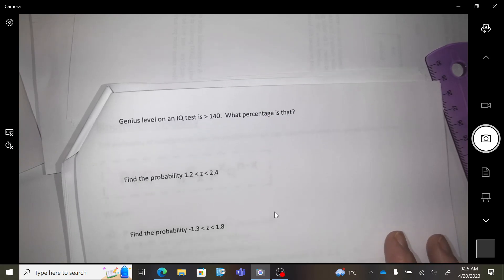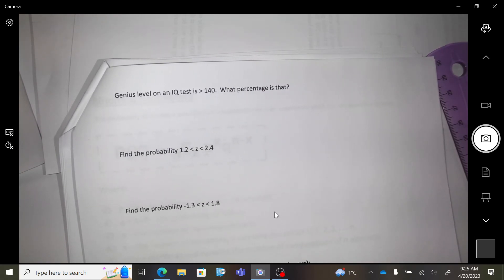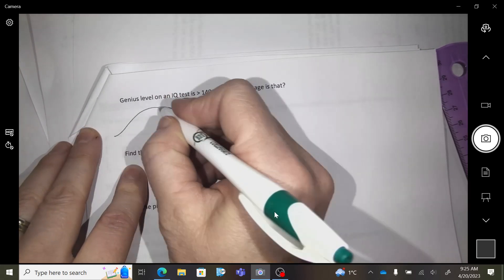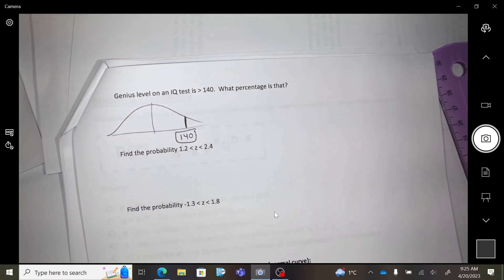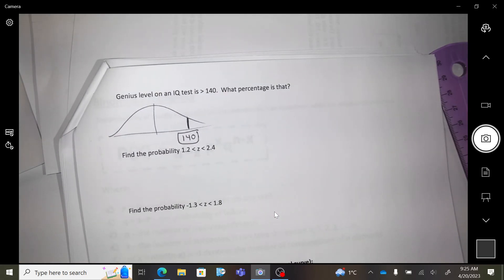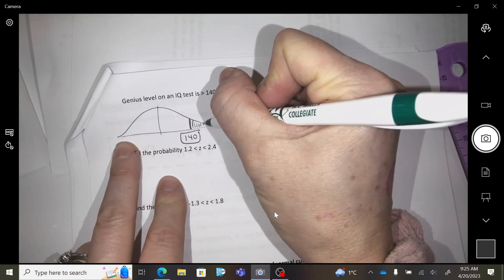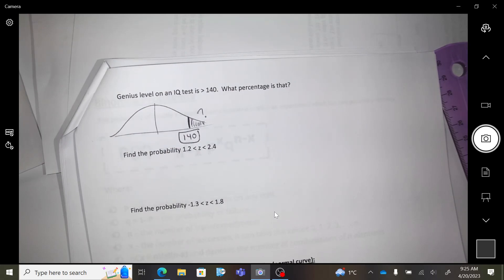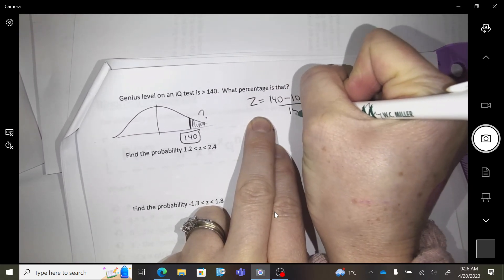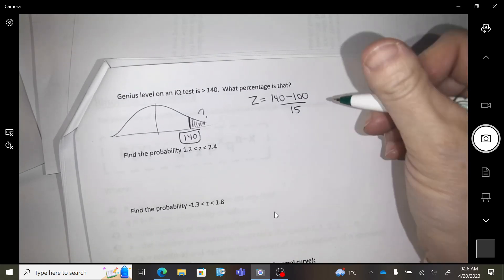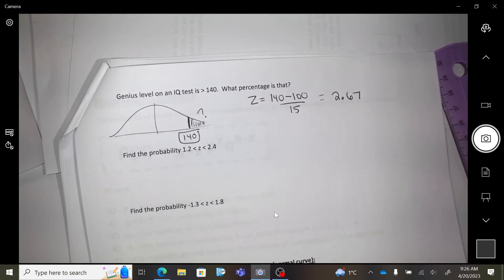Okay, what percent of people get above 140? Because you're a genius if you get 140 or more above it. So 140 would be way over there, right? What percent of the people get above it? So how much percent of the population is in that zone? So z equals 140 minus 100 over 15. So 2.67 is the z-score right there.